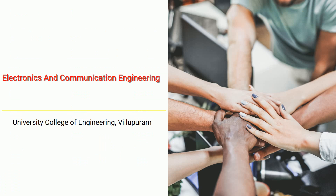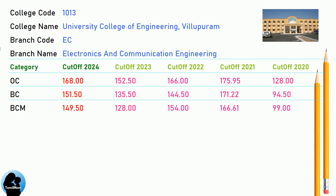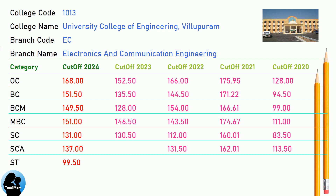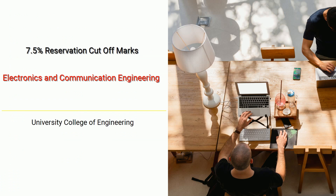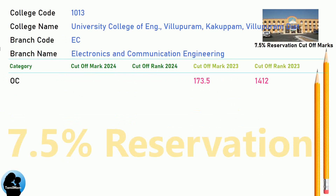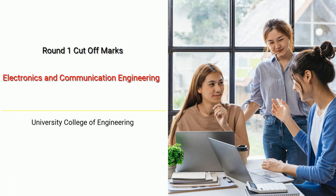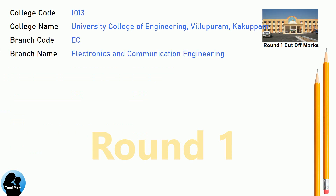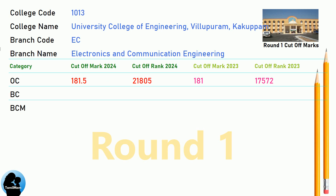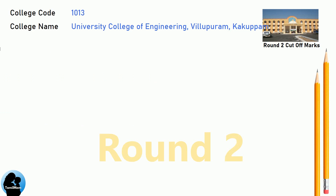BNA Cut-off for University College of Engineering, Villapuram in Electronics and Communication Engineering. DNA 7.5 Reservation Cut-off for University College of Engineering, Villapuram in Electronics and Communication Engineering. DNA Round 1 Cut-off for University College of Engineering, Villapuram in Electronics and Communication Engineering.